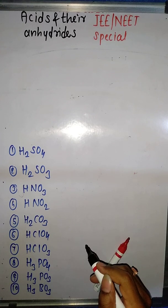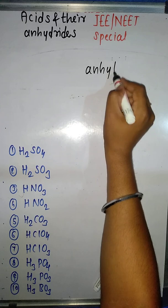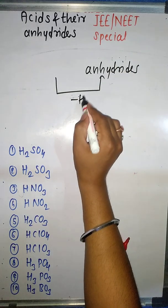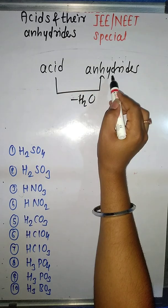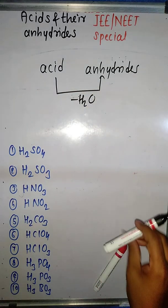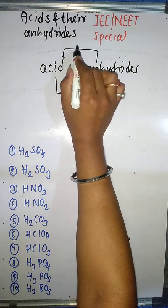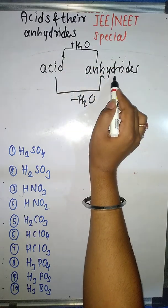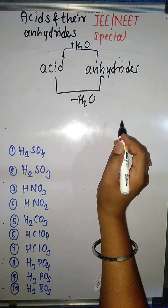Today our topic is acids and their anhydrides. Anhydrides are molecules obtained by loss of water from the acid. The reverse is also true: when water is added into an anhydride, we get the corresponding acid.